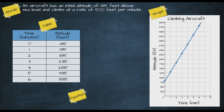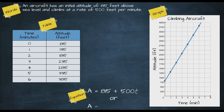Last but not least, let's look at an equation representation. We'll use the variable A for altitude. We have an initial altitude of 815 feet, and since altitude is increasing over time, we add 500 multiplied by the number of minutes passed, represented by t: A = 815 + 500t. Keep in mind it's common to write this with the rate first: A = 500t + 815. Both equations represent the exact same relationship.